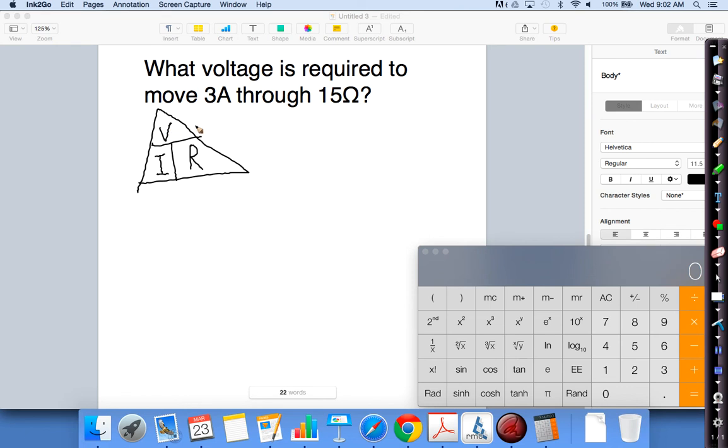In this case, I'm looking for voltage, cover up the V. If I put my thumb over that there, it looks like I'm going to take my current times resistance, so I times R. So in this case, my current was 3 amps. My resistance is 15 ohms. 3 times 15, I could use a calculator, but 3 times 15 is 45.